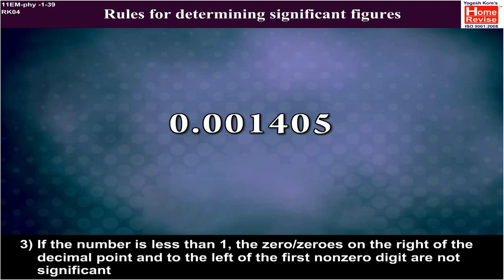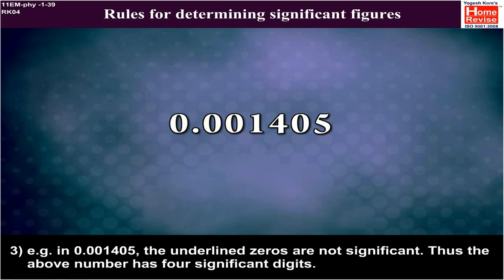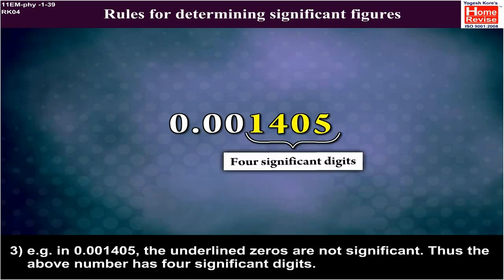3. If the number is less than 1, the zero or zeros on the right of the decimal point and to the left of the first non-zero digit are not significant. Example, in 0.001405, the underlined zeros are not significant. Thus, the above number has four significant digits.